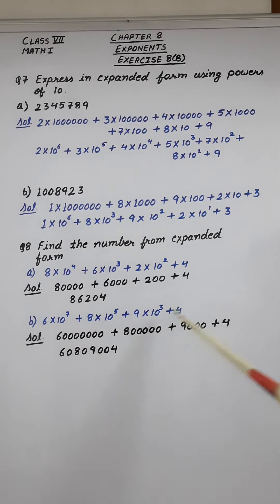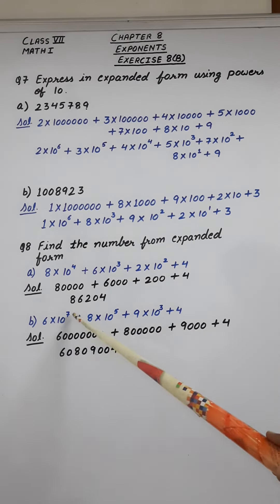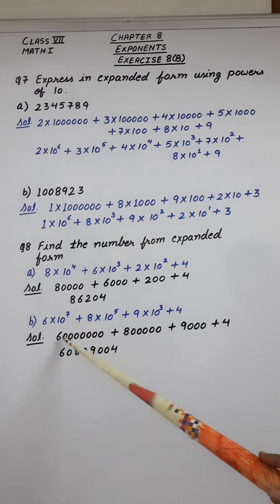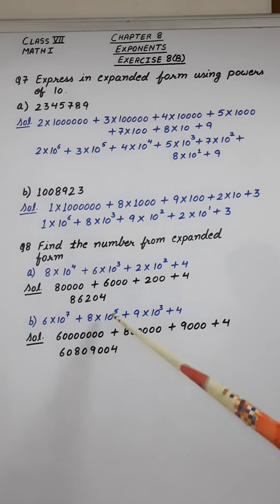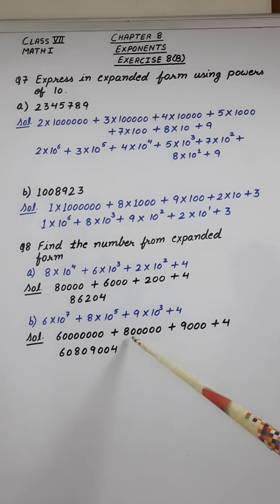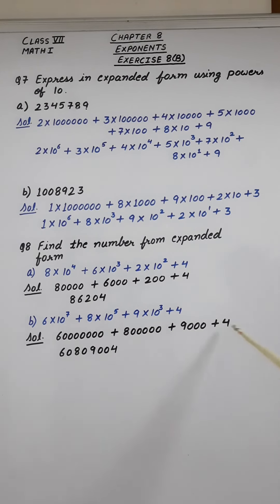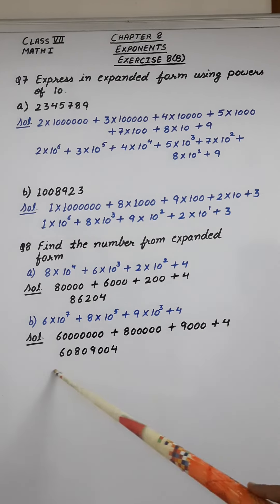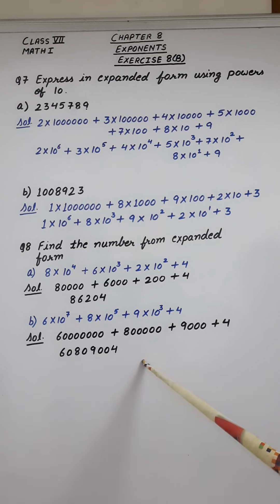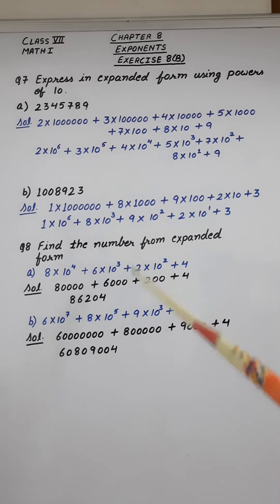Next one, here it is. Now 10 raised to the power 7, that means 0 will come 7 times. 10 raised to the power 5, that means 0 will come 5 times here. And then after that 10 raised to the power 3, so it will be 9,000 plus 4. On adding these numbers, the result is this one. So this is how to calculate the number we have to find from expanded form.